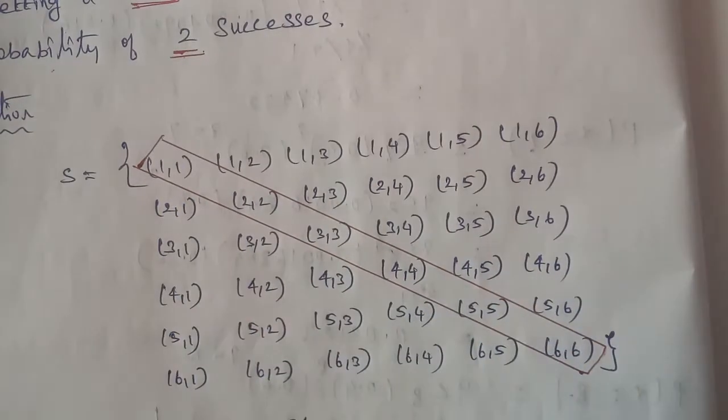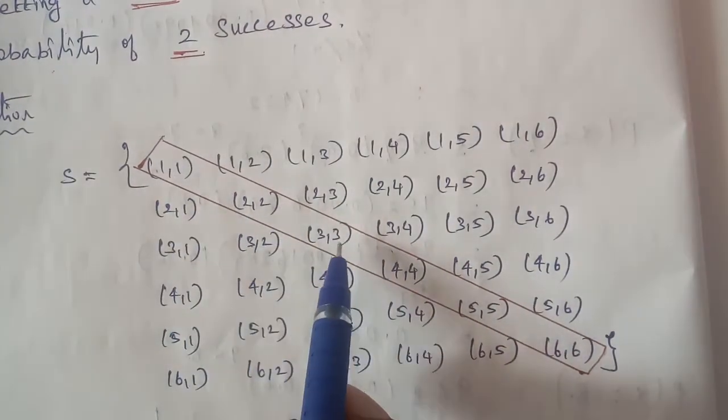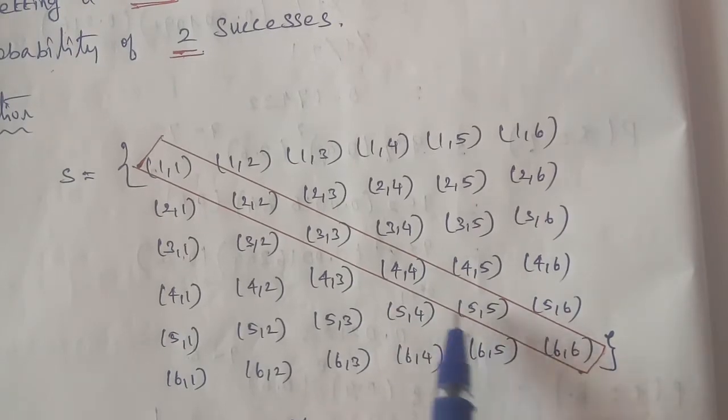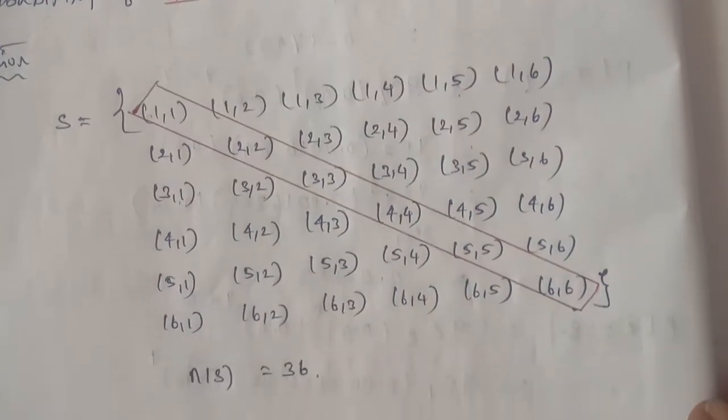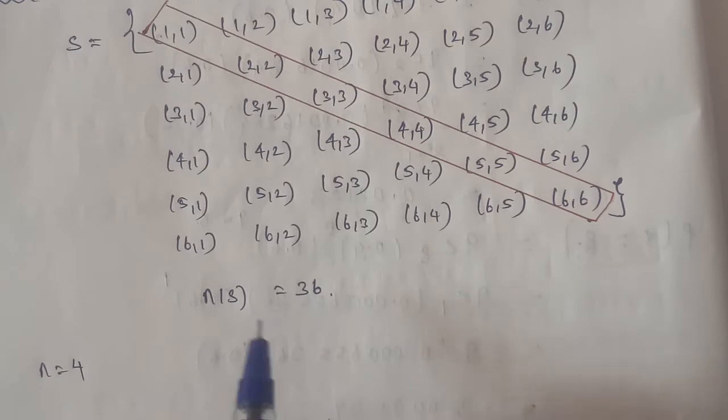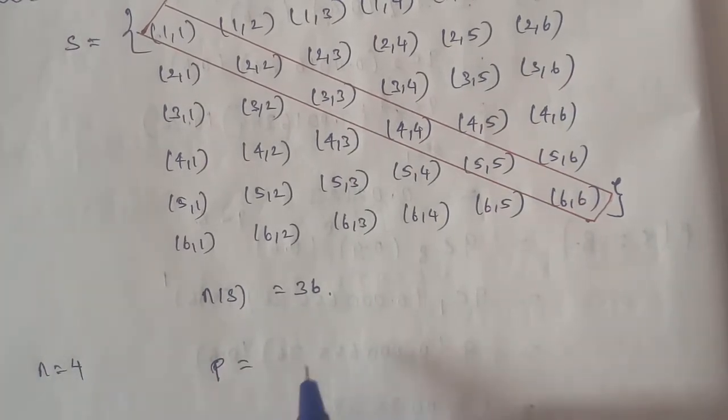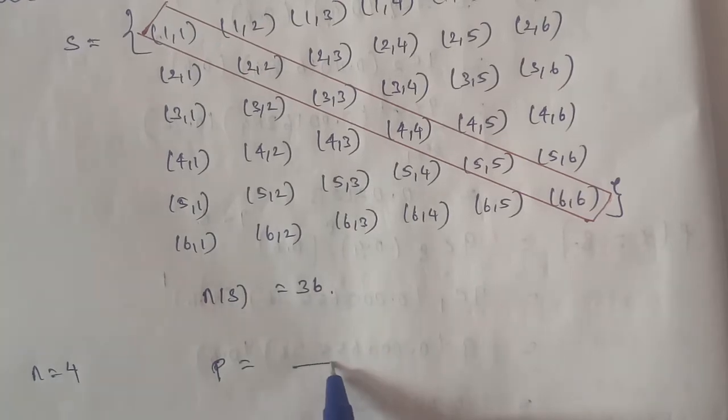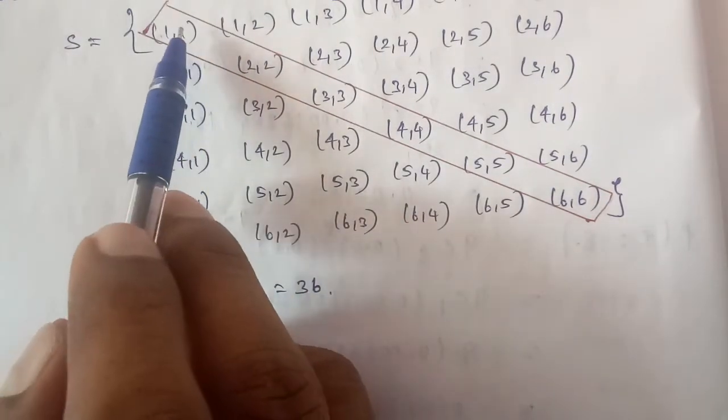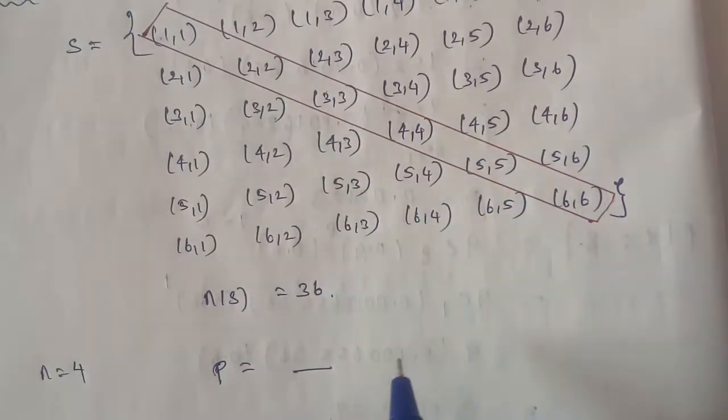Doublets available are (1,1), (2,2), (3,3), (4,4), (5,5), (6,6). These are the doublet numbers. So therefore, p is equal to doublet numbers. Total available: 1, 2, 3, 4, 5, 6.